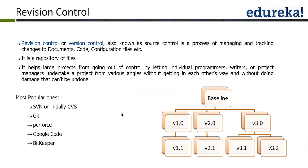Whenever you release a new bug fix on version 9, that becomes version 9.1. If further bugs are reported, you get 9.2 and so on. This is how the version control system works. The reason you need it is so you can roll back to a previous version — the organization needs different versions stored in a repository, called the source control or revision control system.